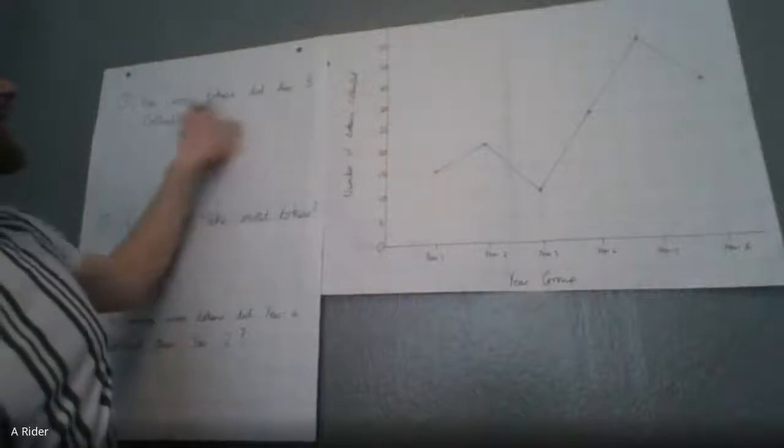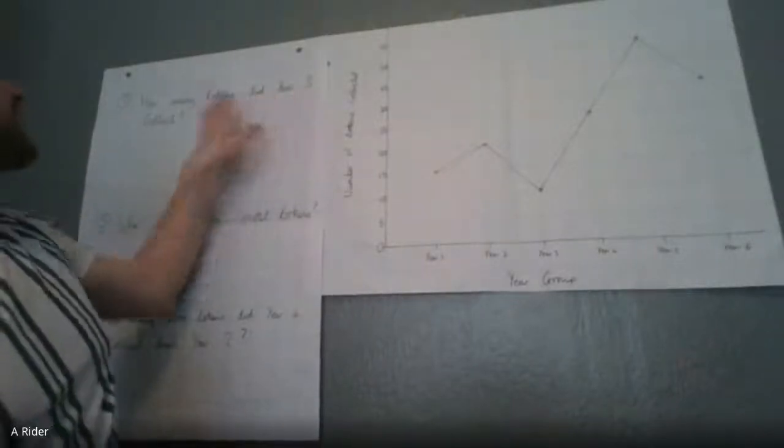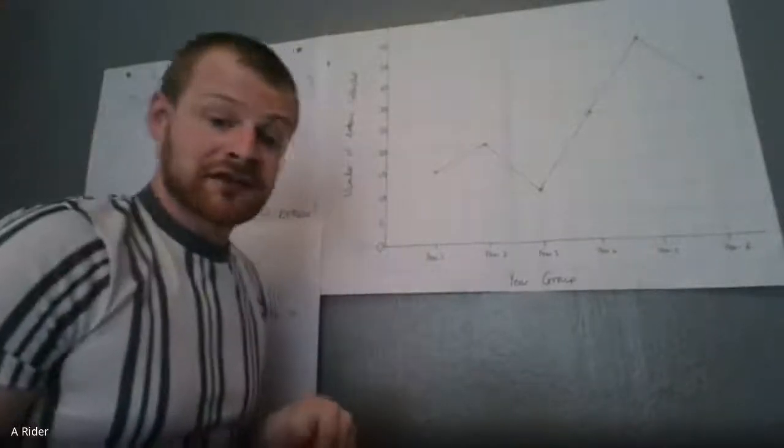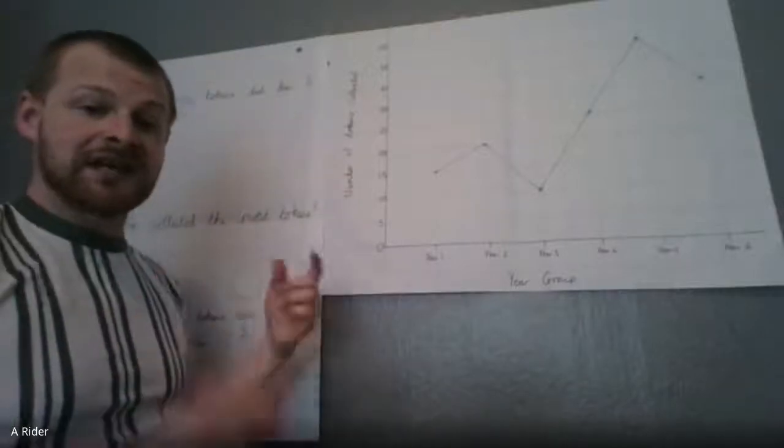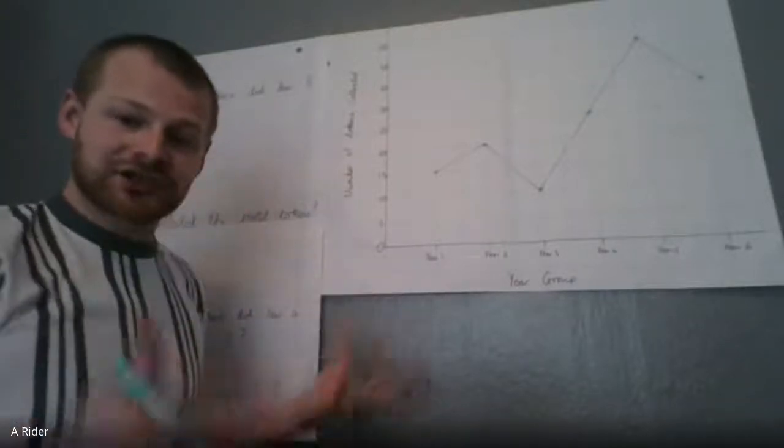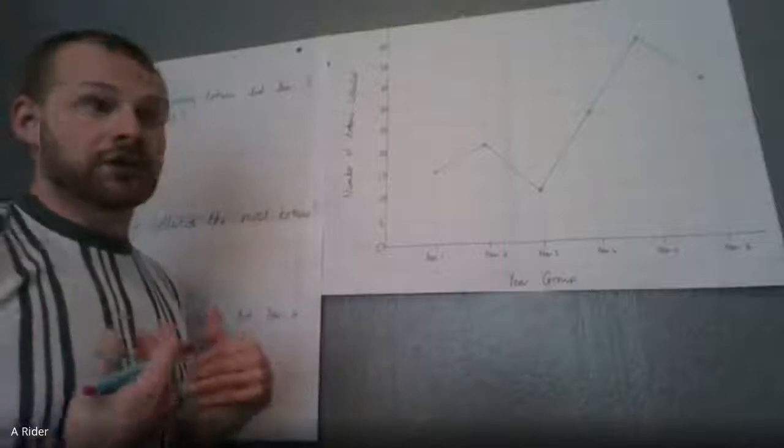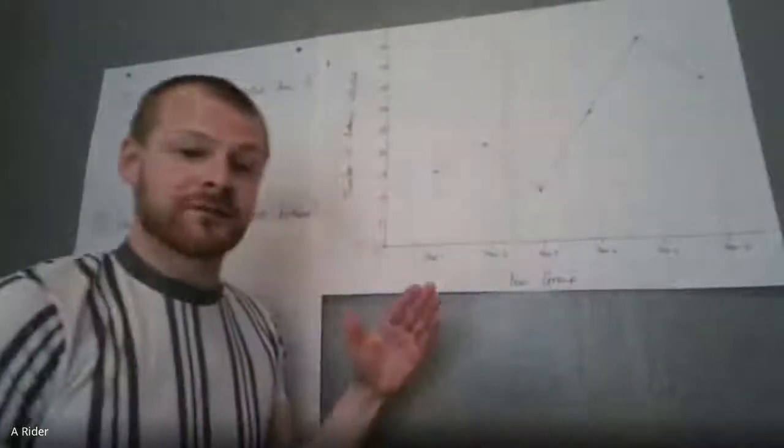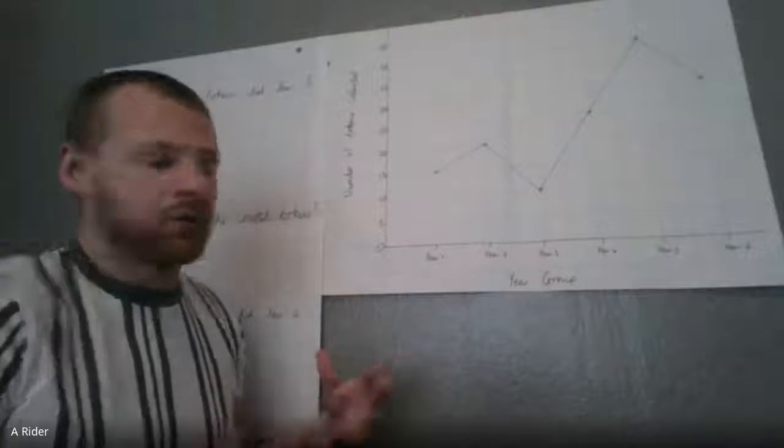Question one is asking me to find out how many tokens year three collected. So I've got to find where year three is and find out how many tokens they collected in total. I could use this geography knowledge of along the corridor and up the stairs for this kind of question.